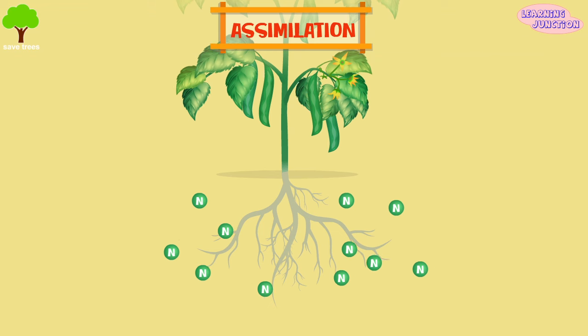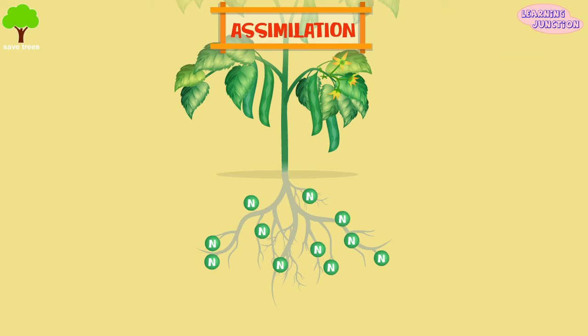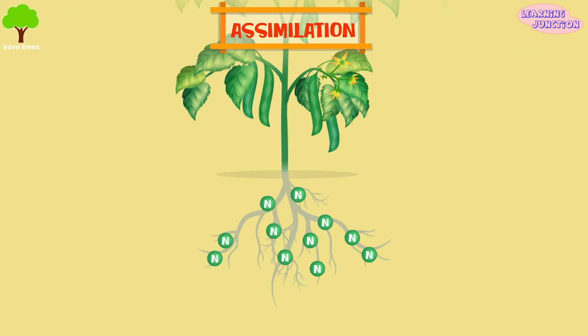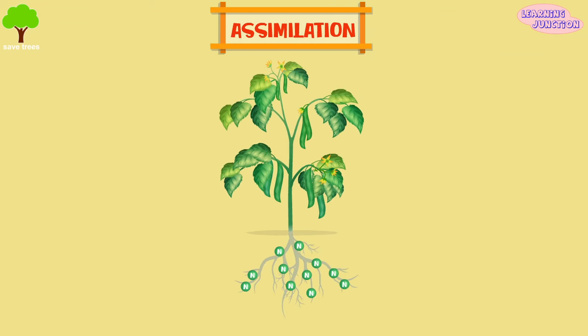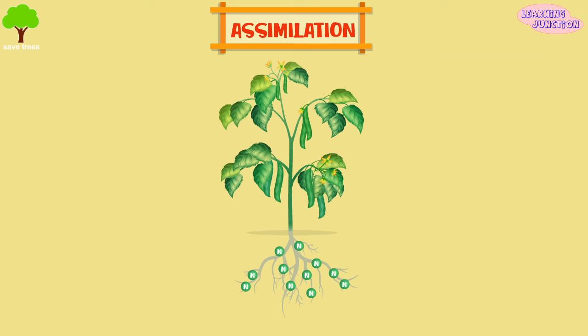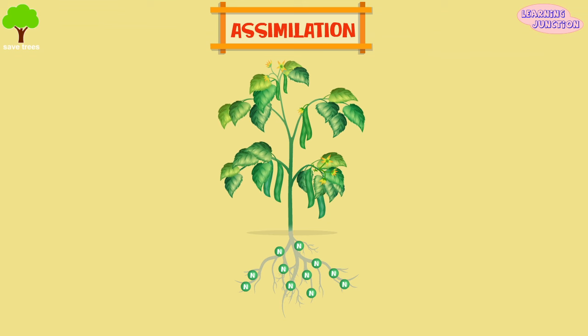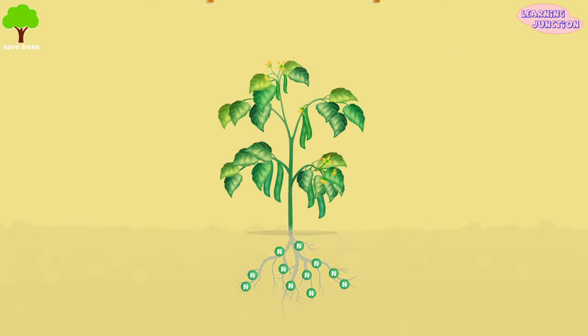Assimilation. This is how plants get their nitrogen. They absorb nitrates from the soil into the roots. Then the nitrogen is used in nucleic acids, amino acids and chlorophyll.